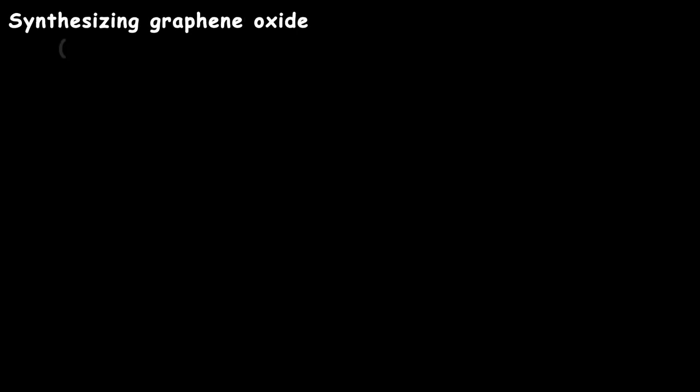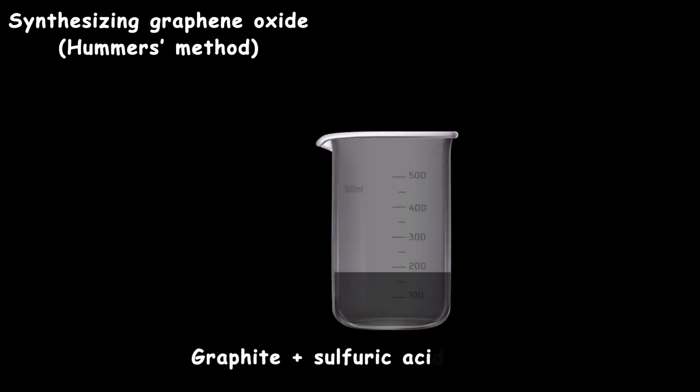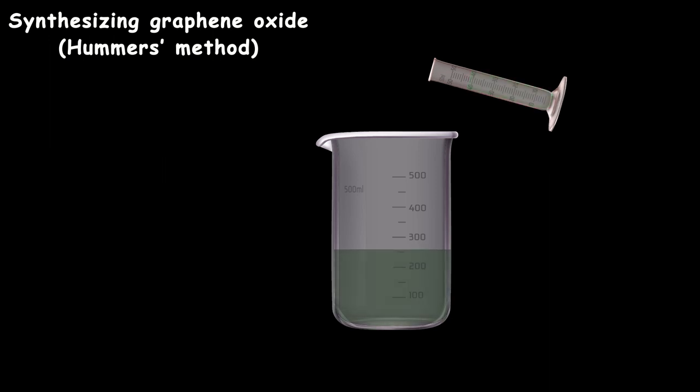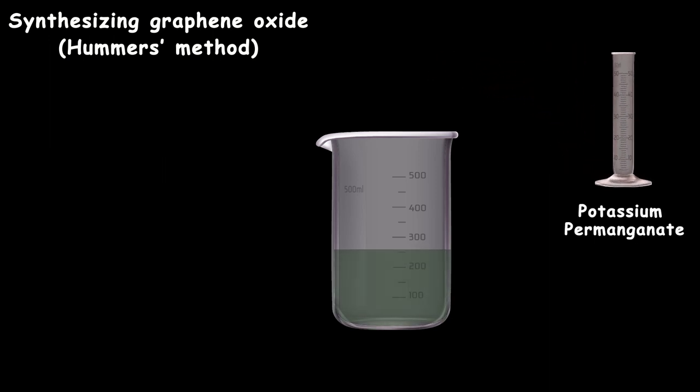First, they synthesized graphene oxide. One of the most popular ways is Hummer's method, in which we dissolve graphite in sulfuric acid and nitric acid, and then we add potassium permanganate, which is a very strong oxidizing agent.